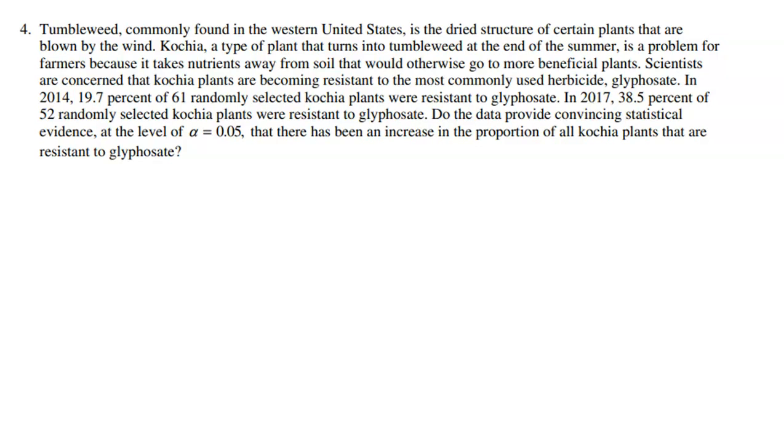Scientists are concerned that Kochia plants are becoming resistant to the most commonly used herbicide, glyphosate. So essentially we have this idea that Kochia plants create tumbleweed. Tumbleweed is a bad thing for farmers. So what do they try to do? They try to use a herbicide to prevent Kochia from growing so they don't become tumbleweed and get annoying to farmers.